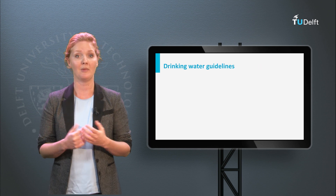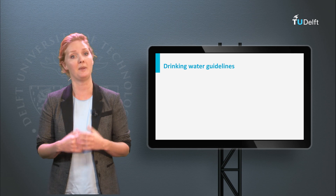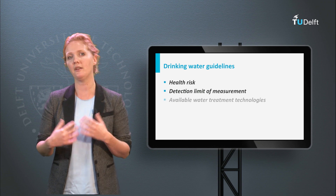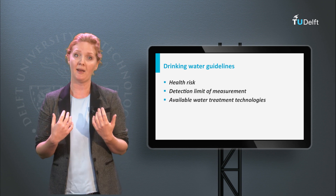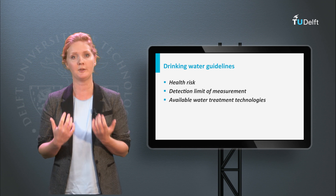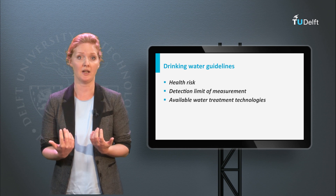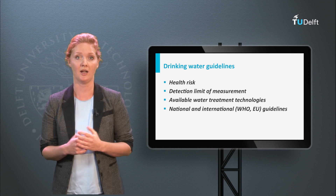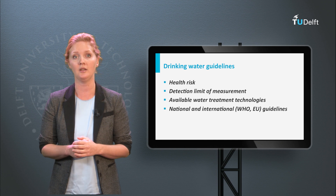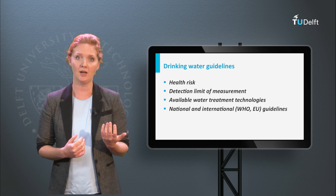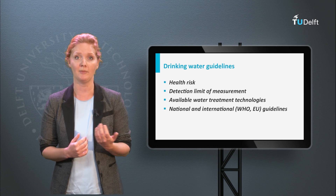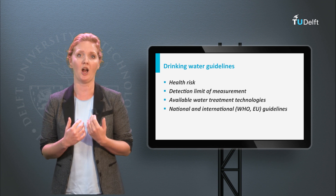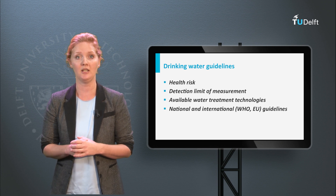Guidelines for the maximum allowable concentration exist for these substances, based on considerations such as health impact, detection limit of the measuring device, or available removal technologies. The impact of a substance on human health depends strongly on the specific constituents, making dose-response and epidemiological studies crucial. Most countries have their own guidelines, and there are also international guidelines from the World Health Organization and the European Union. In EU guidelines, a maximum allowable health risk of 10 to the minus 5 is used — in other words, no more than 1 in 100,000 persons can develop an illness for each contaminant.